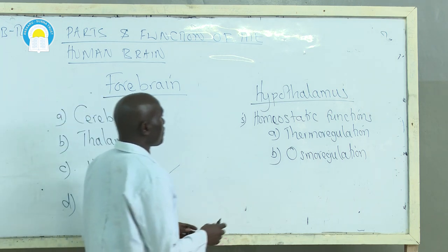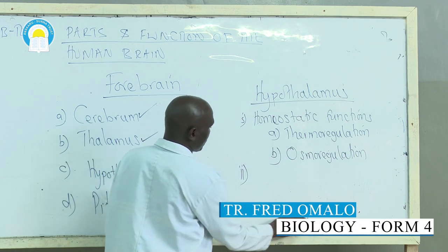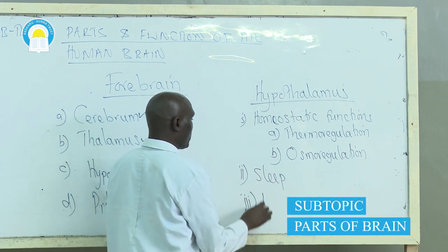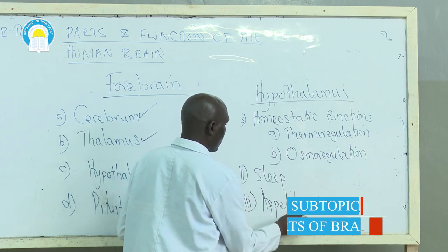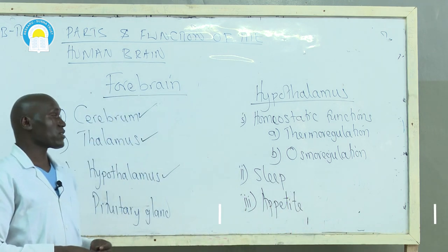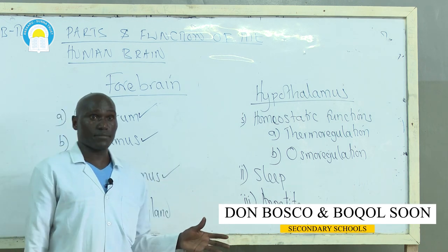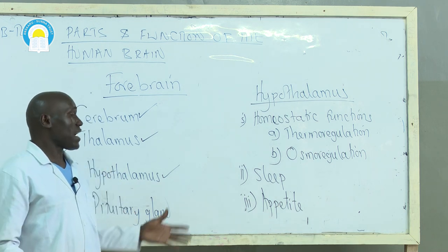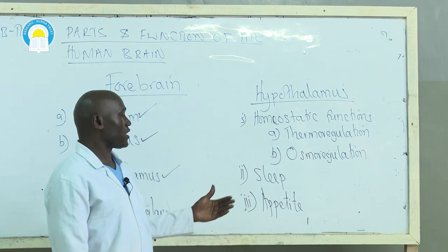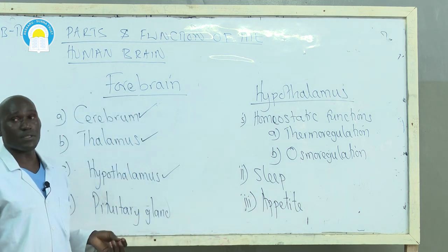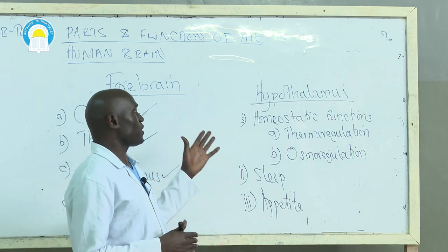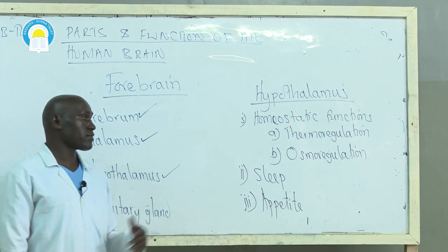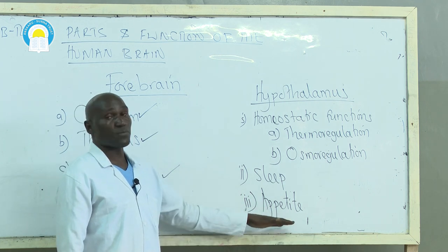The other functions of hypothalamus are controlling sleep and appetite. Hypothalamus brings about sleep or wakefulness — it is the one that makes an individual feel sleepy or stay awake. The appetite of an individual is also controlled by hypothalamus, whether an individual has lost appetite or has a sharp appetite.